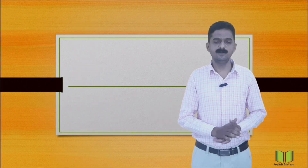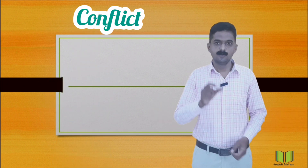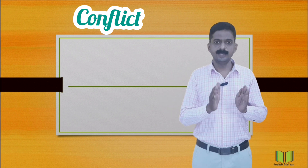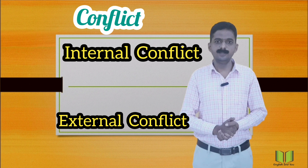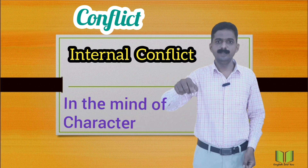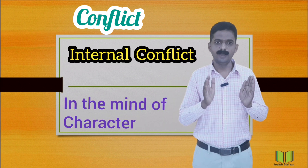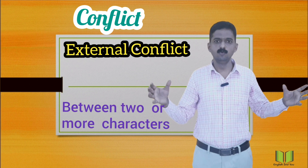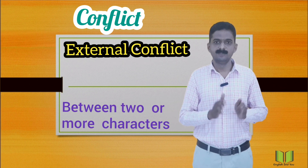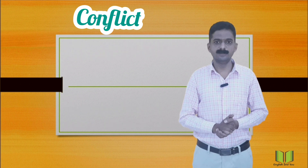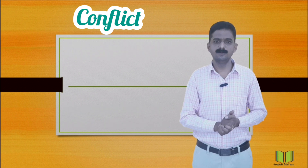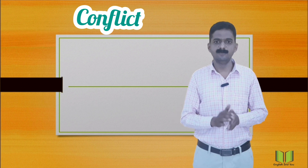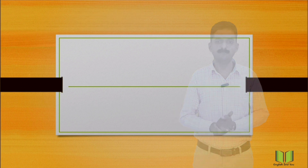The next element of drama is Conflict. Conflict is the soul of drama. It has two types: internal conflict and external conflict. Internal conflict is in the mind of a particular character, while external conflict is between two or more characters. For example, in Shakespeare's King Lear, we can notice both internal and external conflict, and in Death of a Salesman, there is internal conflict. These are the elements of drama.